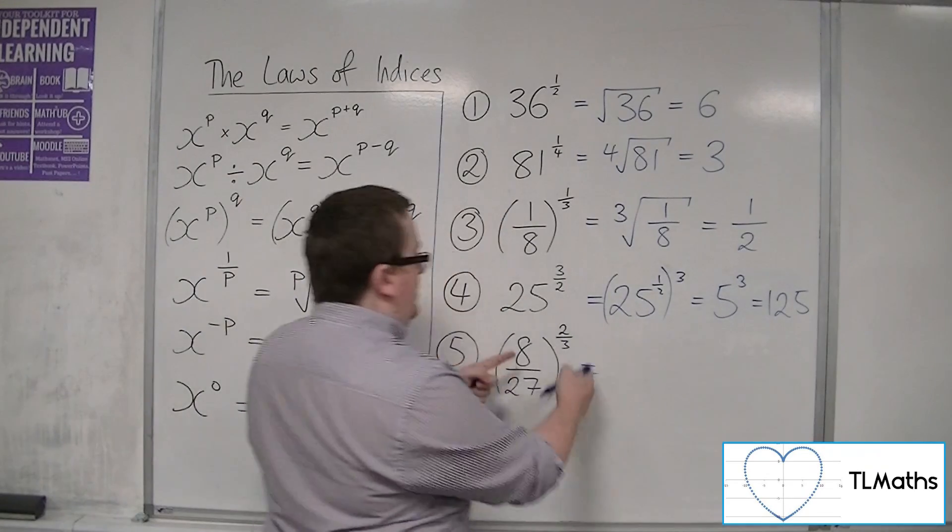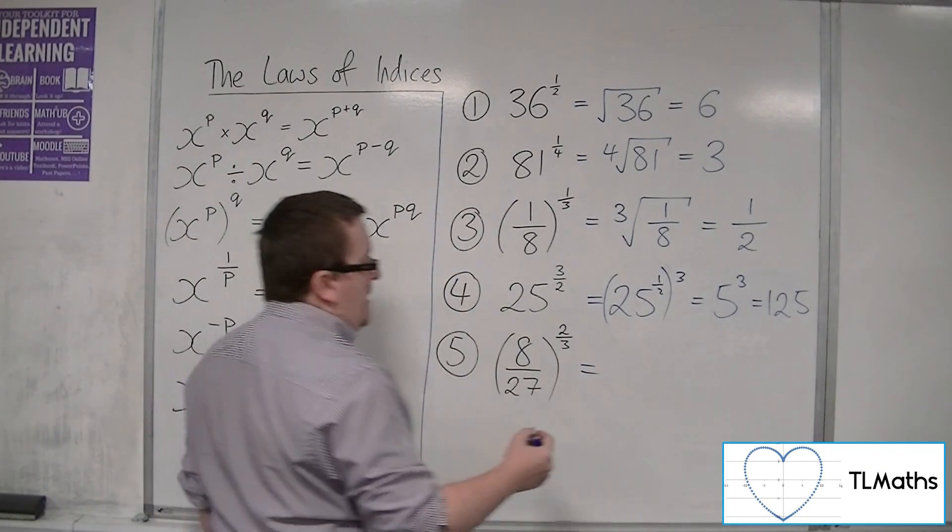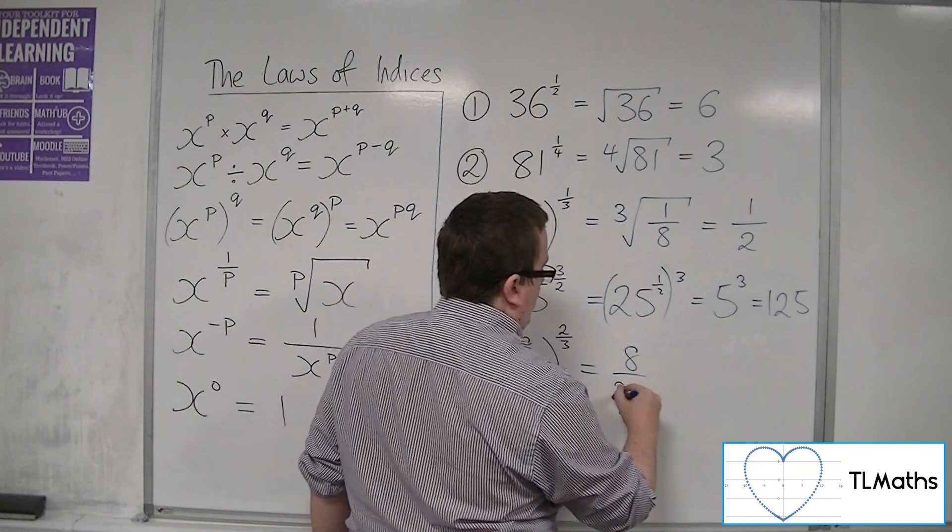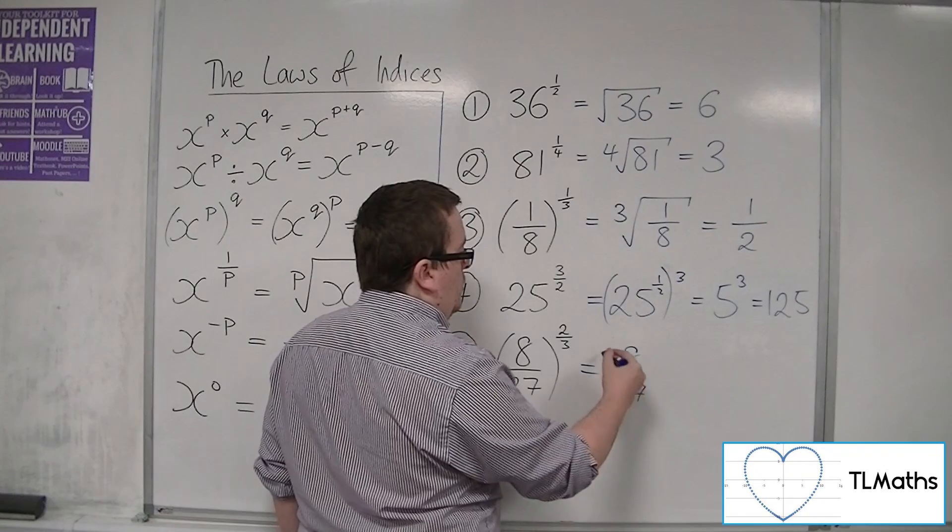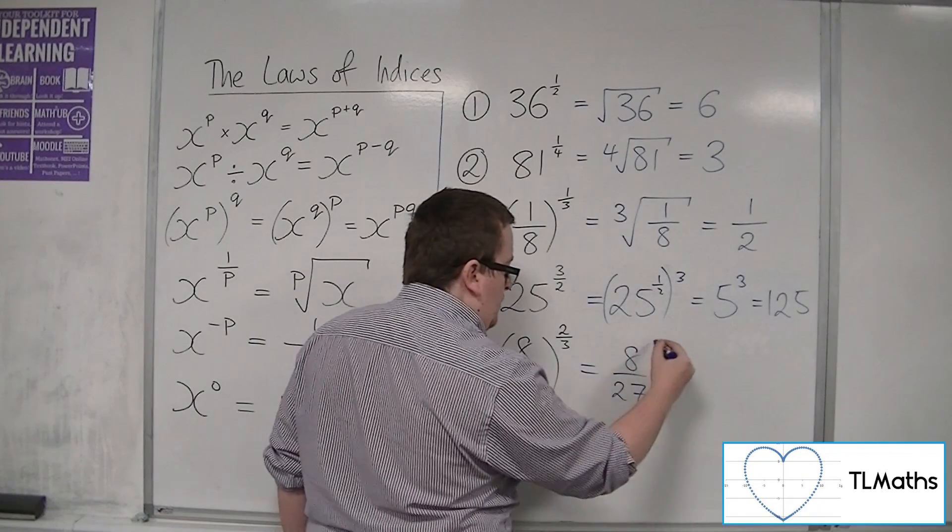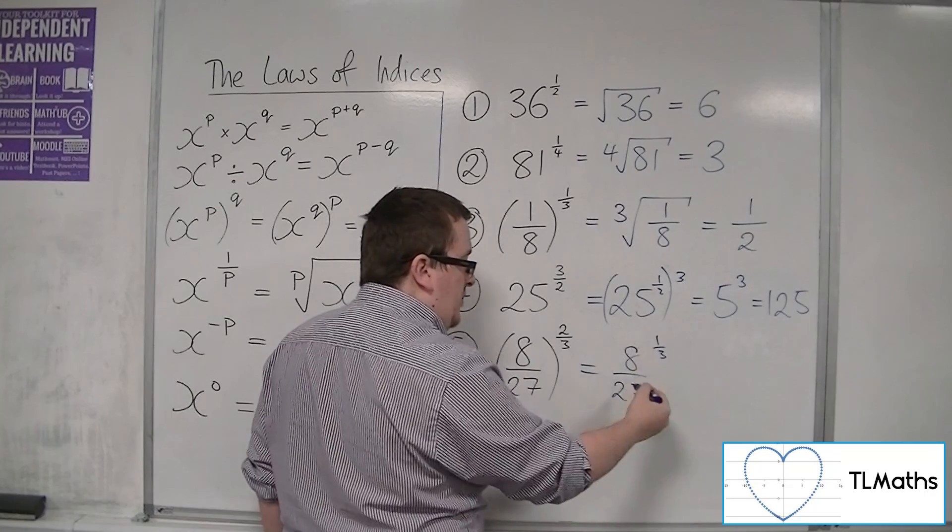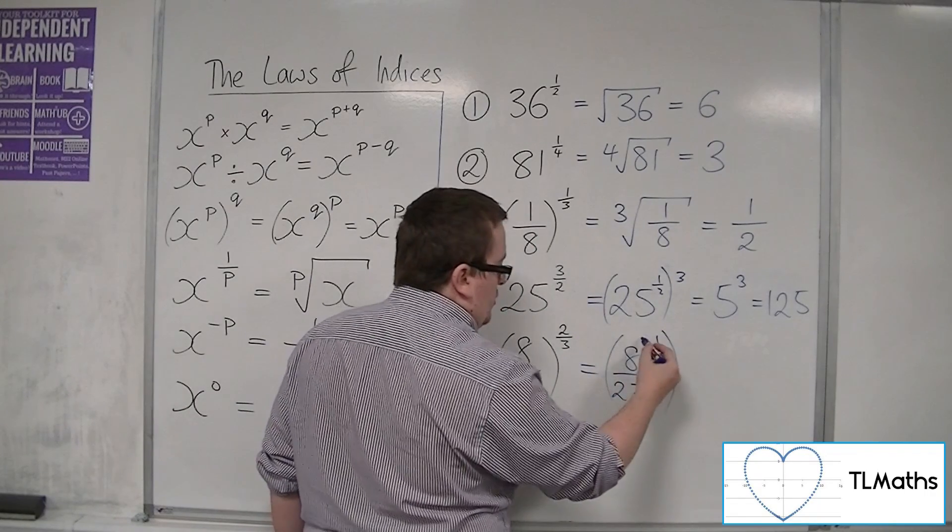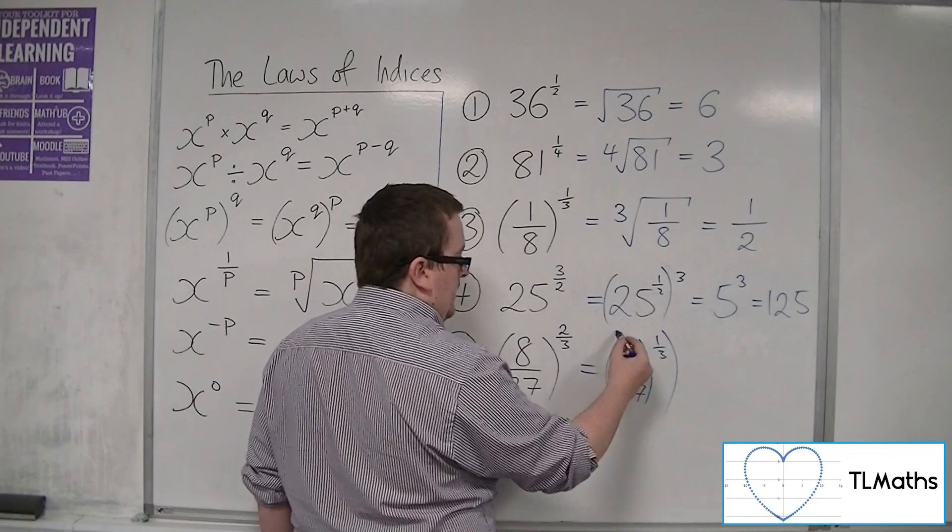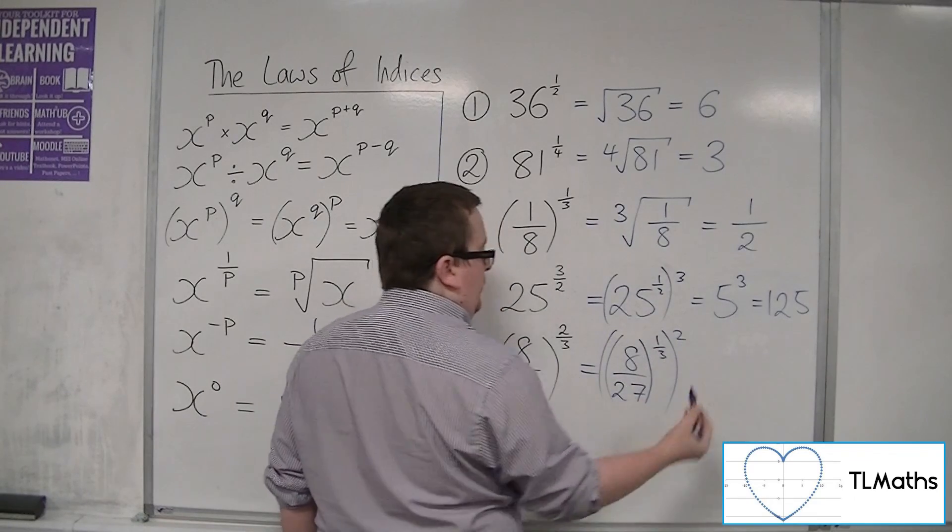So when I'm dealing with this problem, it makes sense to think about it as 8 over 27, cube rooted first, and then, actually I'll best put that in a separate bracket, and then deal with the squared.